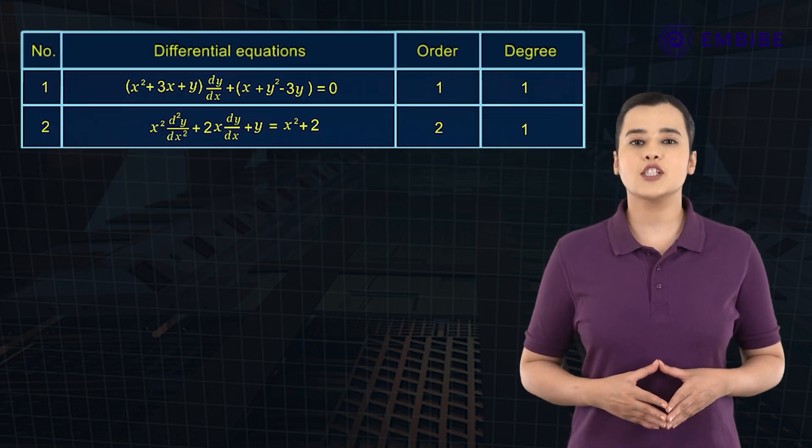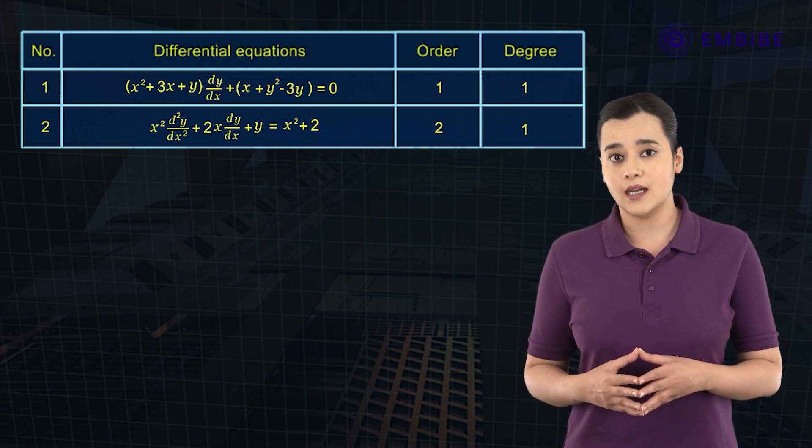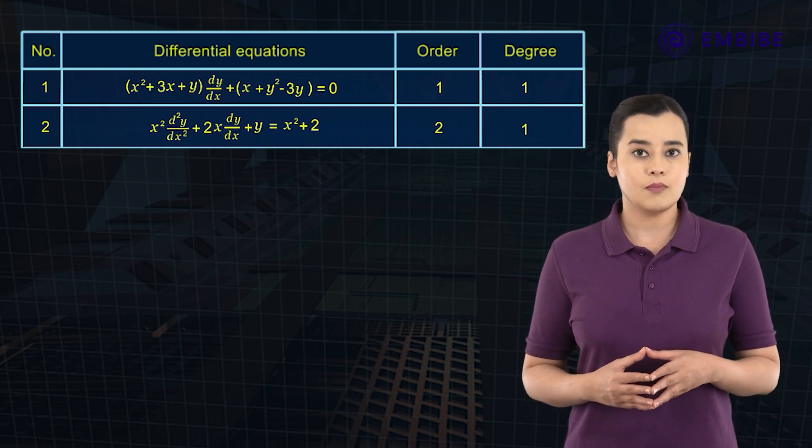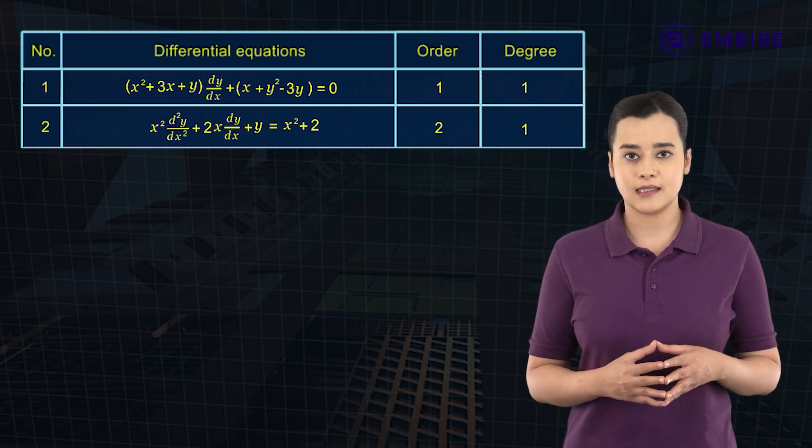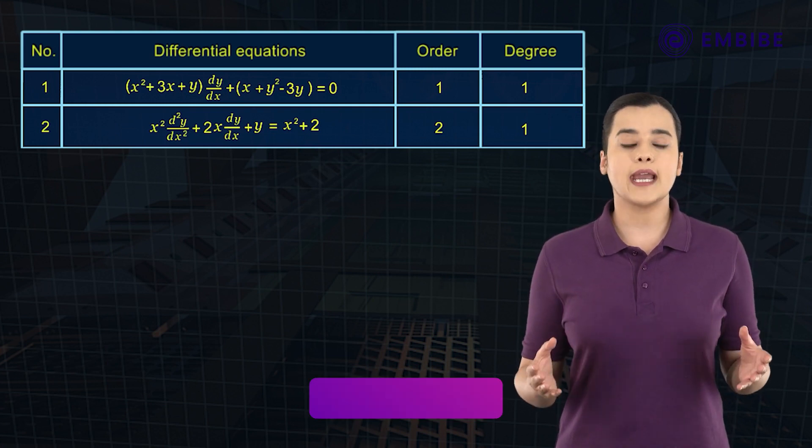Number 2: x²(d²y/dx²) + 2x(dy/dx) + y = x² + 2. Here the order is equal to 2 and the degree is equal to 1.